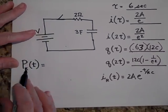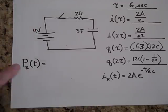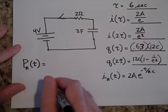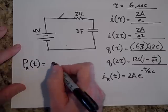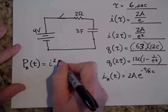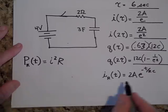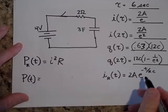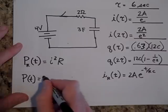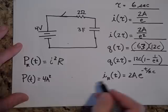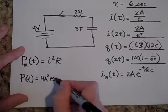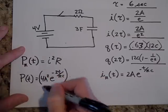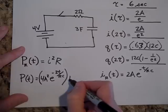What will be the power of the resistor as time goes on — what equation describes the power? It's I squared times R. I-squared means we square the current expression, so the power as it changes with time is 4 amps squared times e to the negative 2t over RC, and R is 2 ohms.